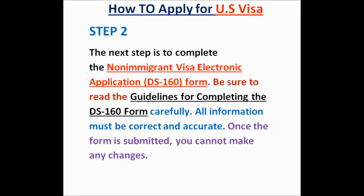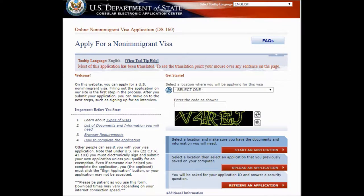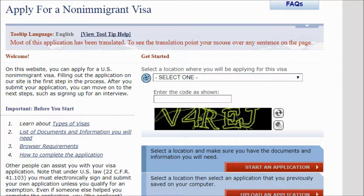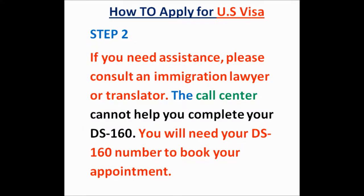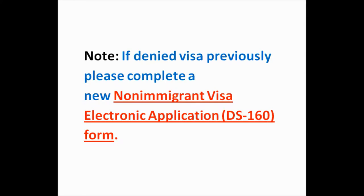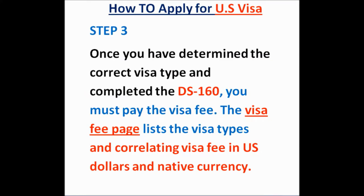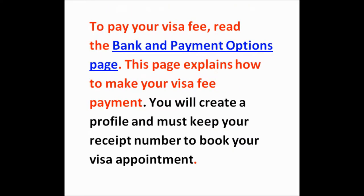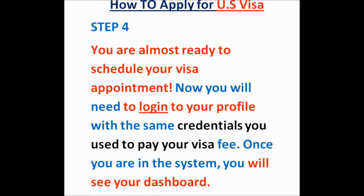The next step is to complete the non-immigrant visa electronic application DS-160 form. Be sure to read the guidelines carefully — all information must be correct and accurate, and once the form is submitted you cannot make any changes. Once you have determined the correct visa type and completed the DS-160 form, you must pay the visa fee. You can pay through NEFT, mobile payment, or cash over the counter at Punjab National Bank or via the Axis or City Bank. You will create a profile and must keep your receipt number to book your visa appointment.